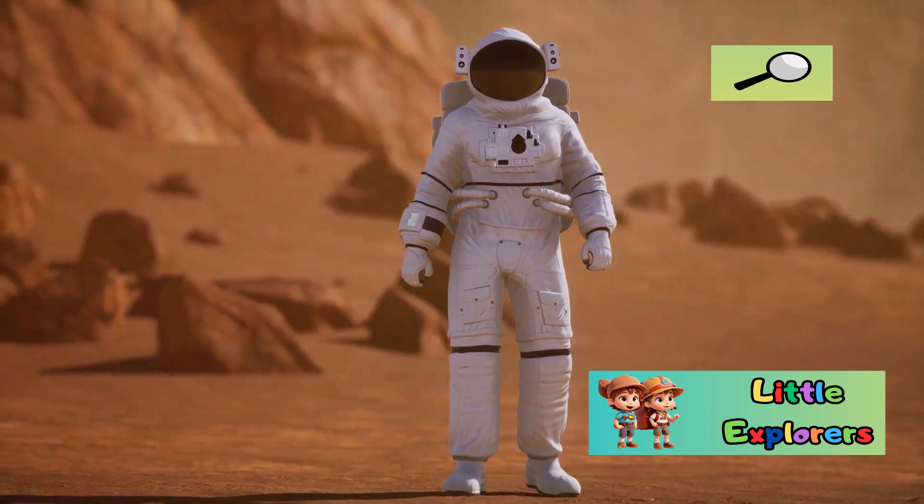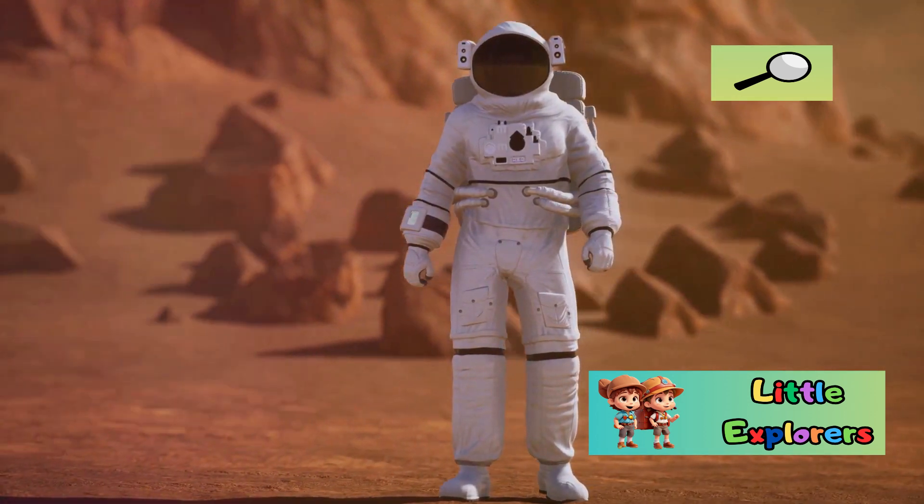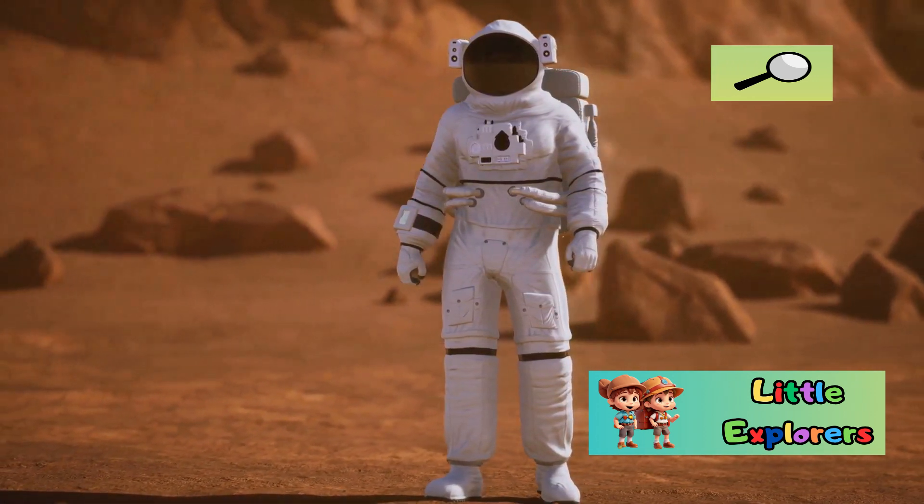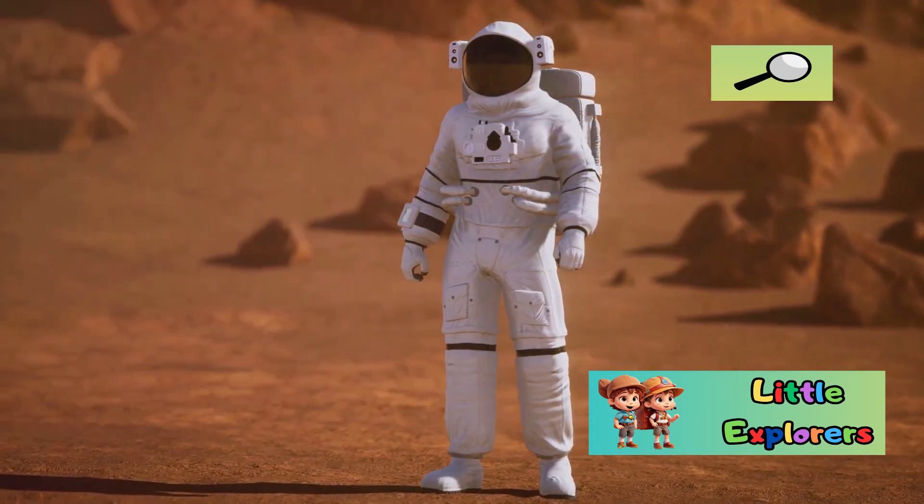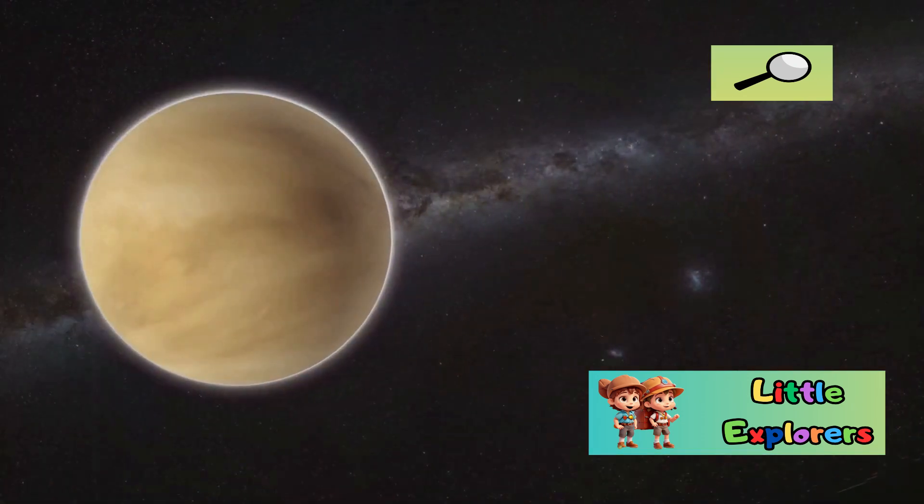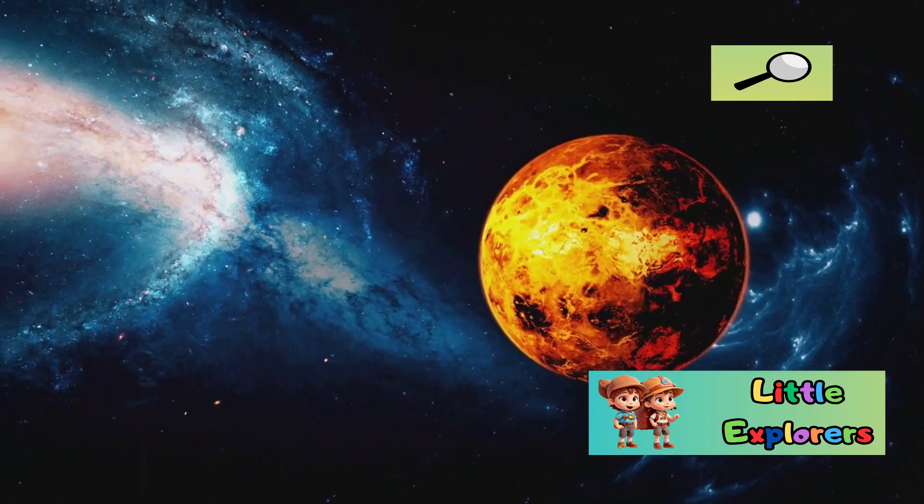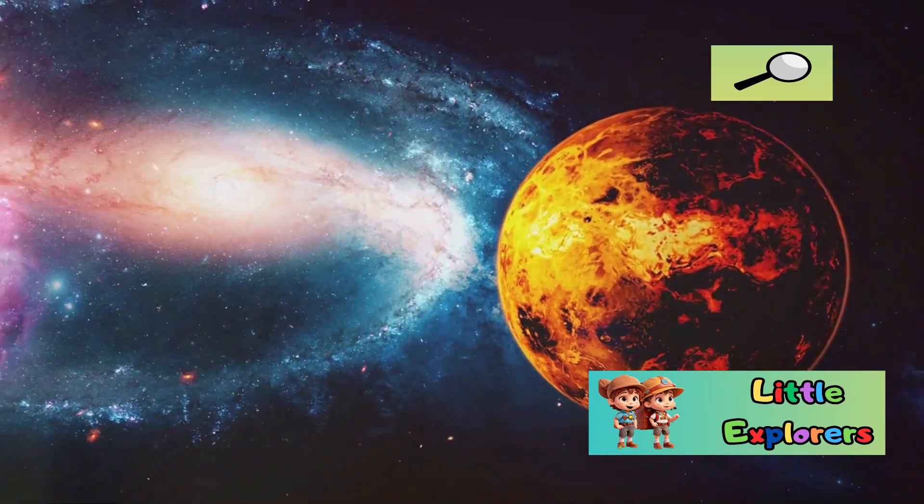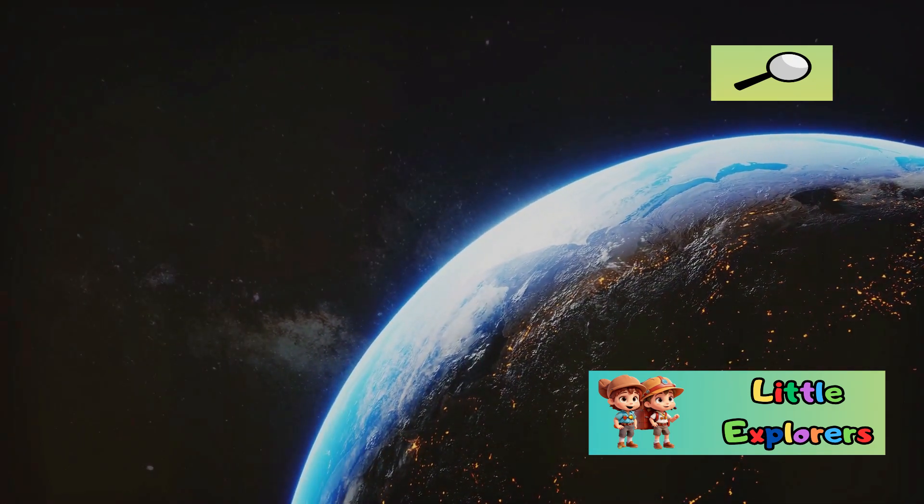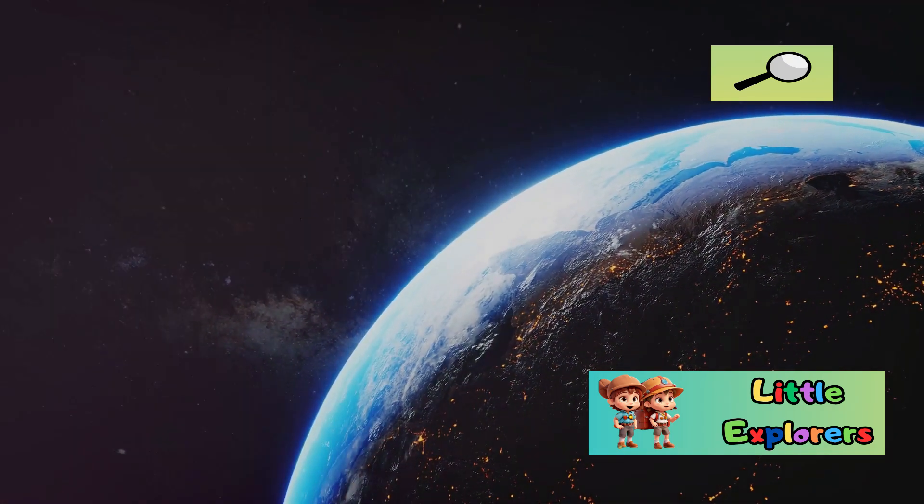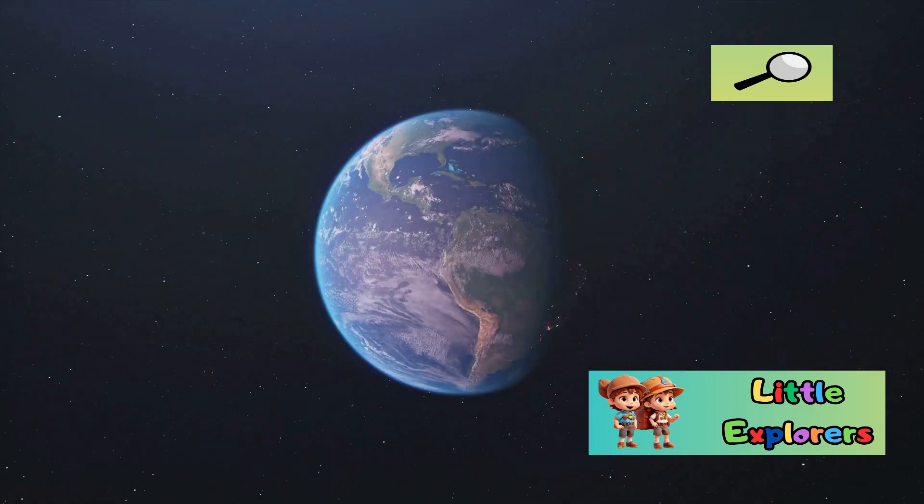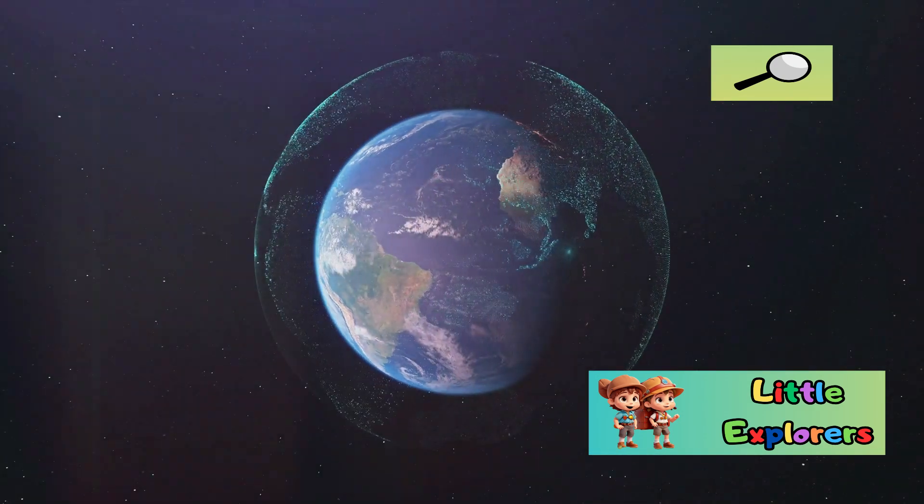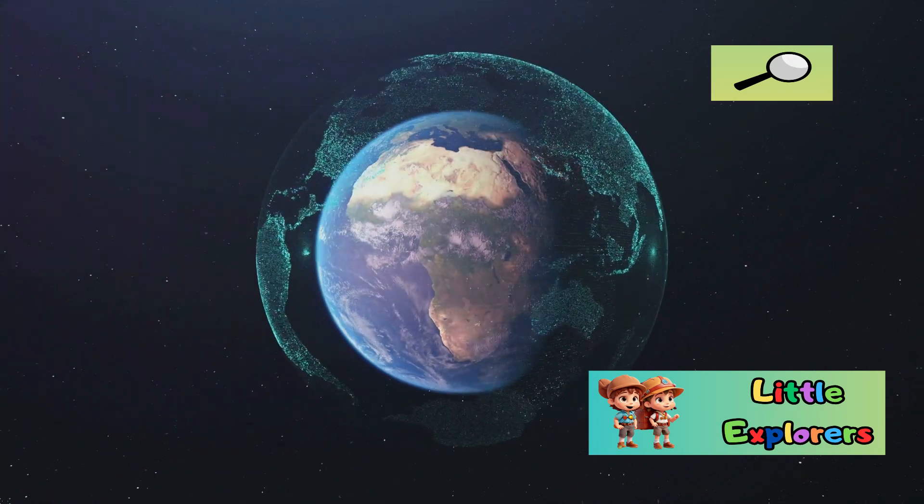Mars has a thin atmosphere, mostly carbon dioxide, making it too cold and with too little air pressure for humans to survive without special suits and habitats. Venus, on the other hand, has a thick toxic atmosphere that traps heat, making it the hottest planet in our solar system. Earth's atmosphere is a protective shield, a delicate balance that allows life to thrive. It's a key ingredient in making our planet the unique and habitable world we call home.